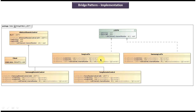The switch on method will turn on the TV, the switch off method will turn off the TV, and using the set channel method you can change the channel of the TV. On the upper left side you can see abstract remote control, which is an abstract class with three abstract methods: switch on, switch off, and set channel.